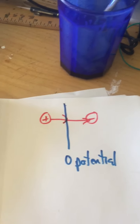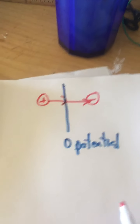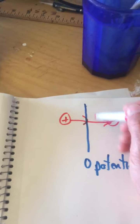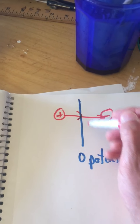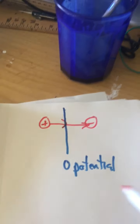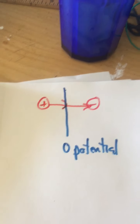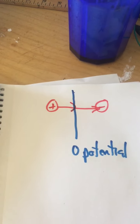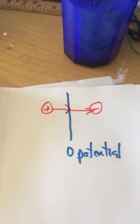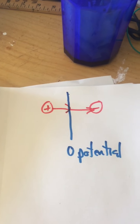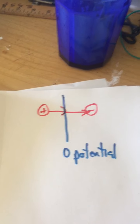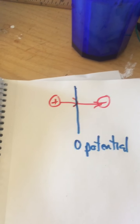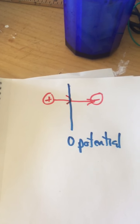Electric field and potential are related — the electric field is basically the change in potential. So if you have a big steep potential, you have a strong electric field. For those of you who are biology students, that's what happens at cell walls. You have huge electric fields at cell walls because you have differences in potential on both sides, and it's a really small distance, which corresponds to a very large electric field. This has definite biological implications.